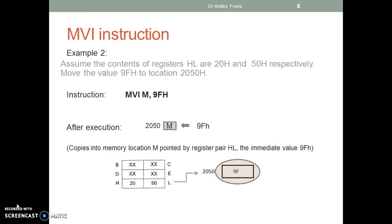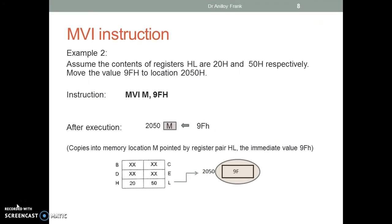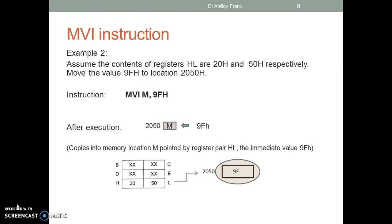MVI example 2 with a memory location: assume the content of the HL pair is 2050. Move the value 9F to location 2050. The instruction MVI M,9F after execution copies the value 9F into the memory location pointed by register pair HL.